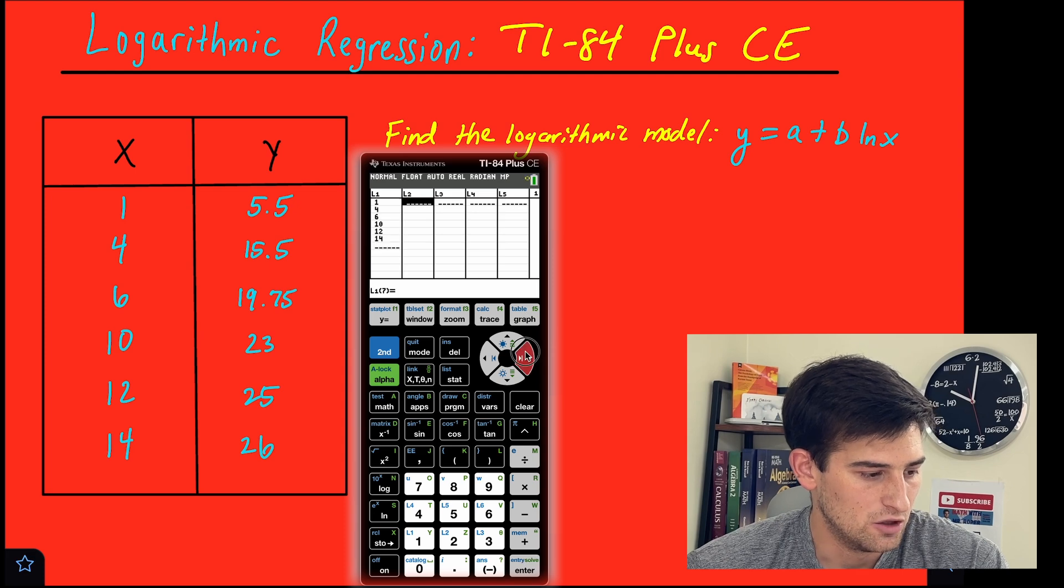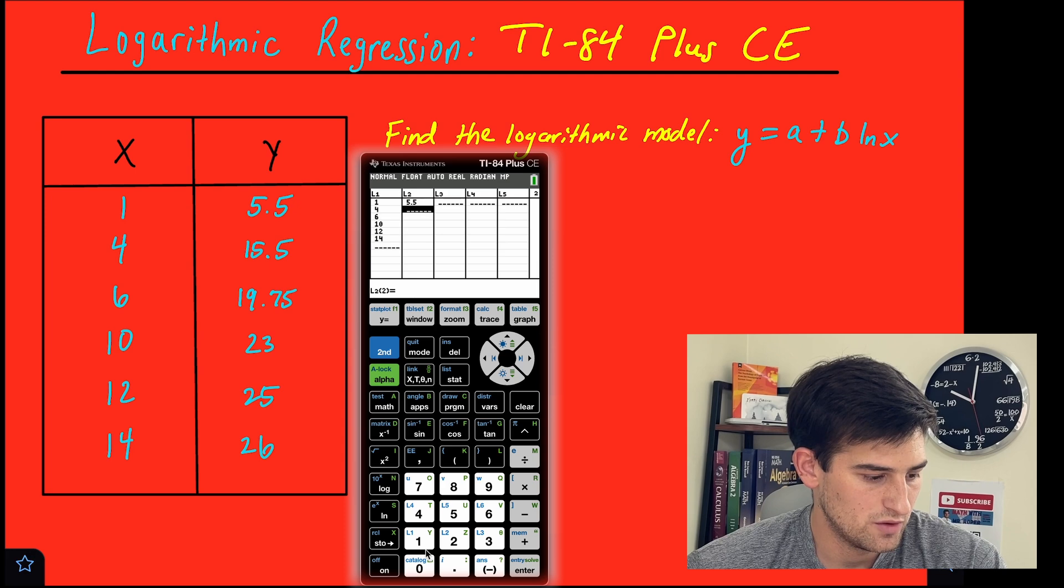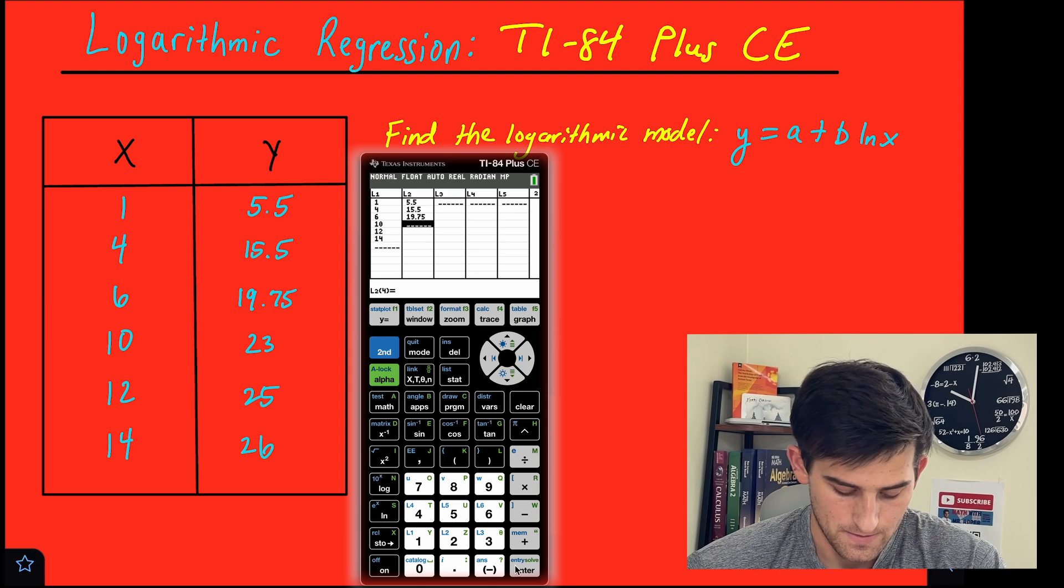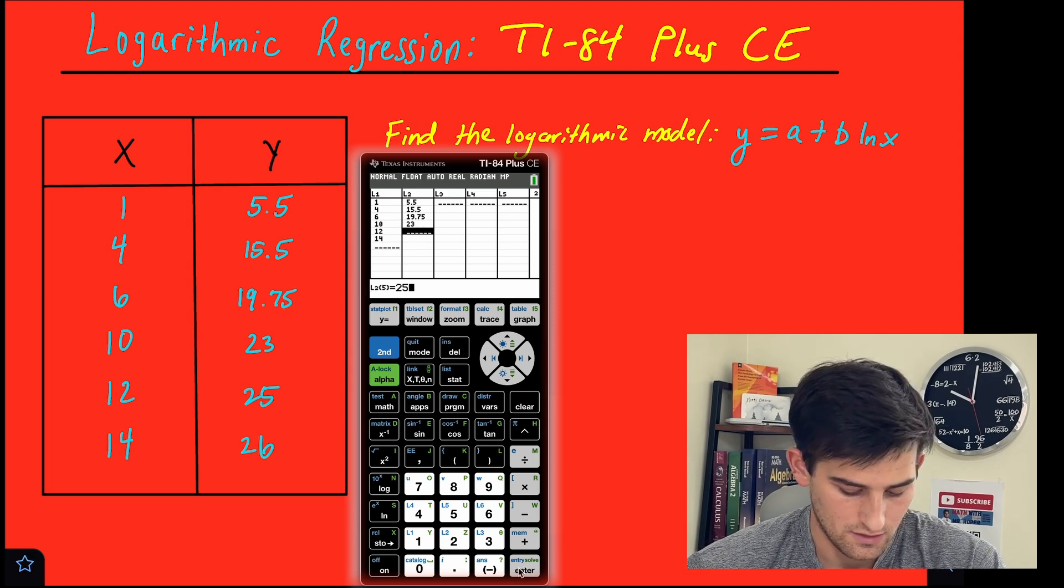All right. Now, over here for L2, these are our y values. So this is 5.5, 15.5, 19.75, 23, 25, and 26, okay?